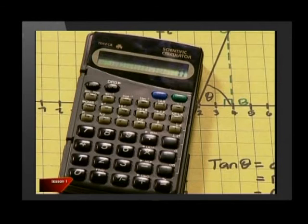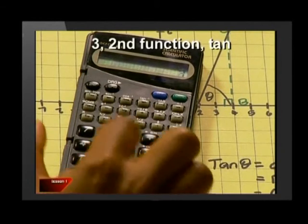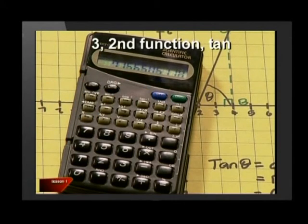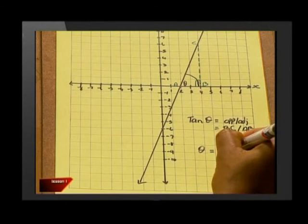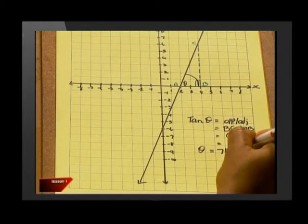All we have to do now is use the inverse tan key on the calculator and we get angle theta is equal to 71.57 degrees. In other words, the angle of inclination of our straight line is 71.57 degrees.